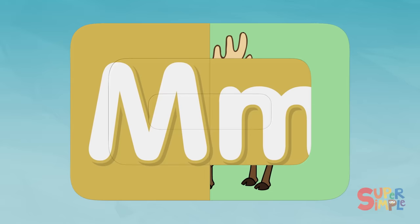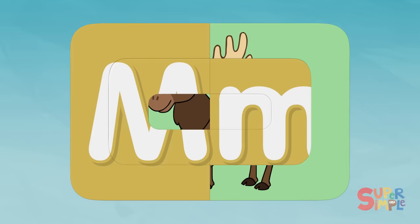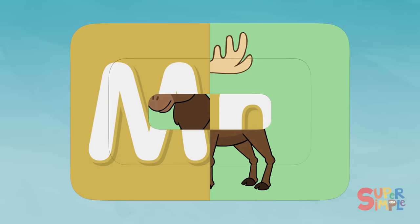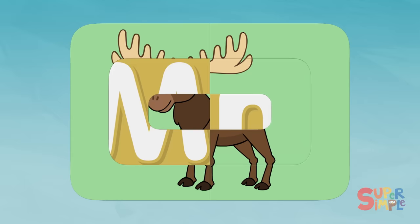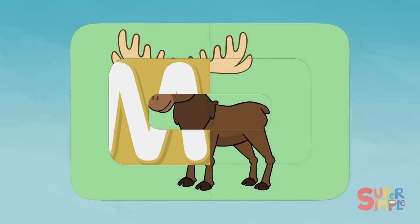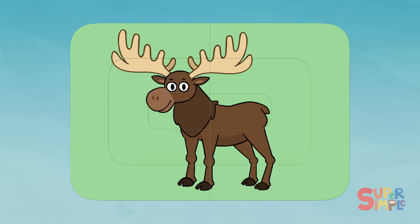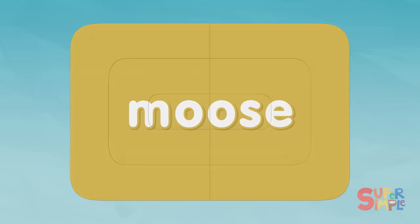I see two feet. This looks like some kind of animal. I see legs. Hmm, what could this be? Oh! I think I know! Do you? Moose! Moose begins with the letter M.